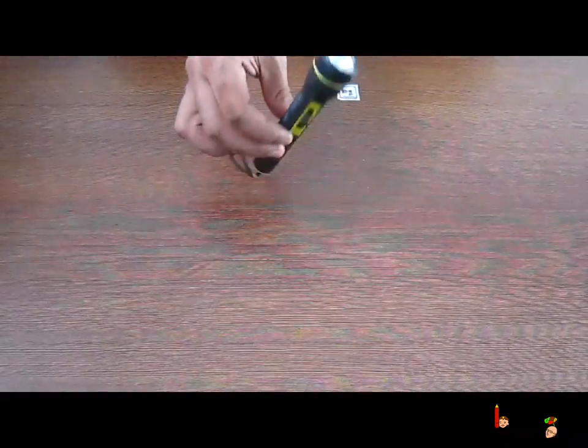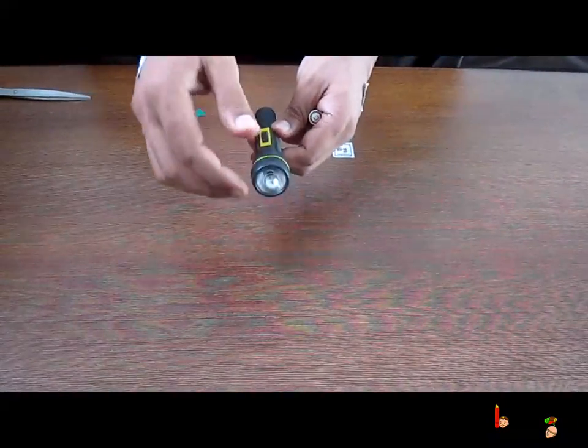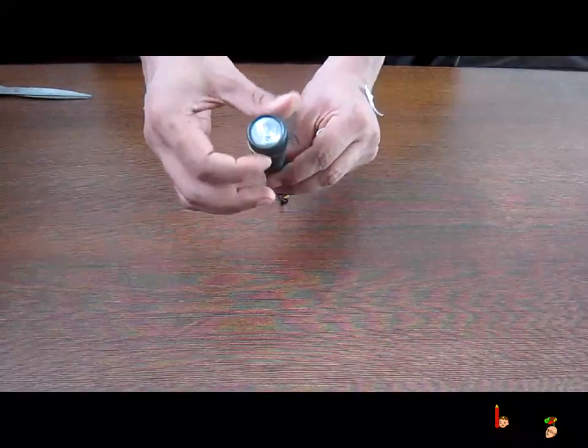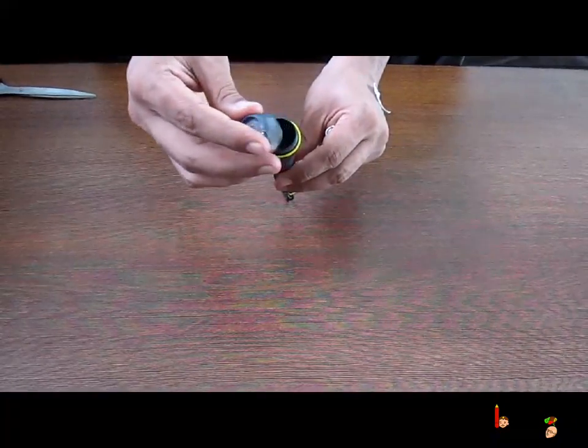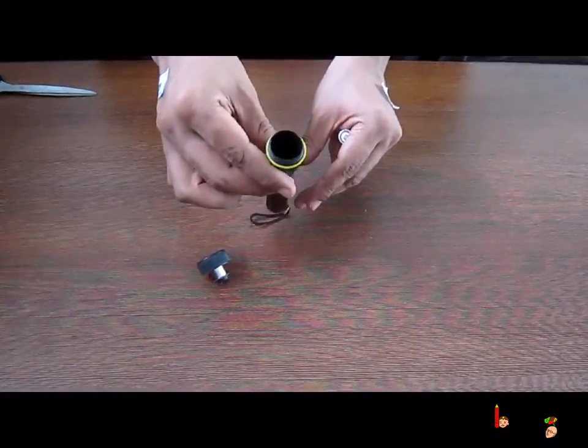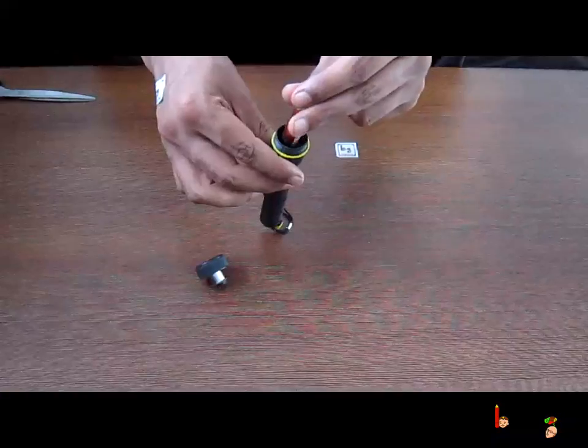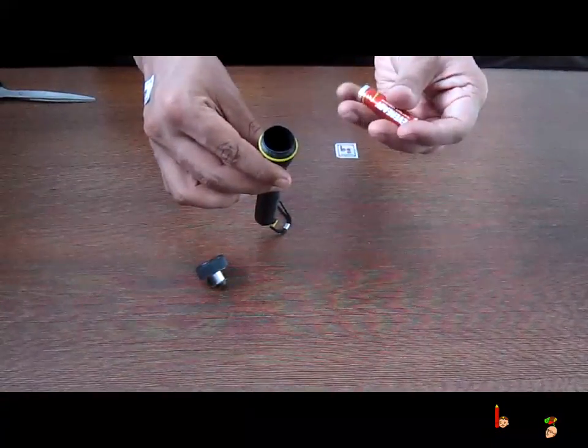Let's see how a torch works. This is a torch. Let's open it from the top. Here there are two cells which we can insert in the torch. Let's insert them without giving thought on which direction a cell goes.